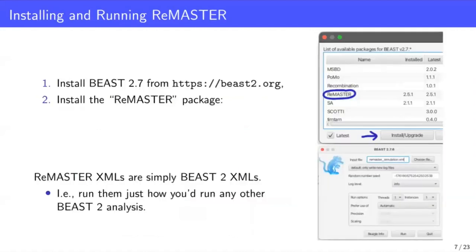To install and run Remaster, it's quite simple. You need BEAST2 installed. And once you have BEAST2 installed, you just need to install the remaster package in the same way that you install other BEAST2 packages. Remaster XMLs are simply BEAST2 XMLs. So this is the format for analyses that you run in BEAST. And the way you run these analyses or run these simulations is to just load these XMLs into BEAST2 as usual.